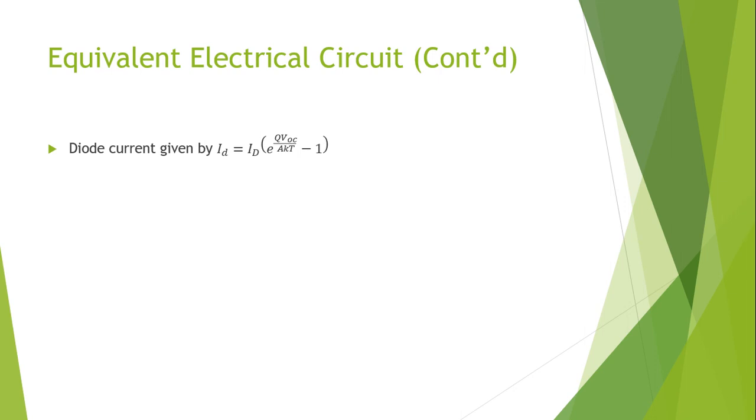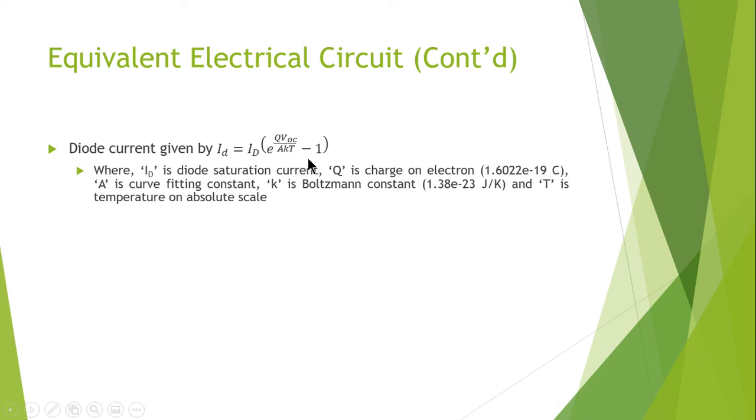The formula for the diode current is given by ID multiplied by E power Q times VOC divided by AKT minus 1, where ID is the diode saturation current, Q is the charge of an electron at 1.602 into 10 raised to power minus 19 coulombs, A is the curve fitting constant, K is the Boltzmann constant 1.38 into 10 raised to power minus 23 Joules per Kelvin, and T is the temperature on absolute scale.